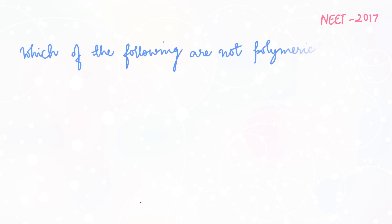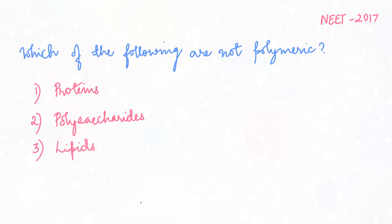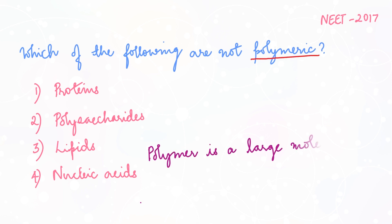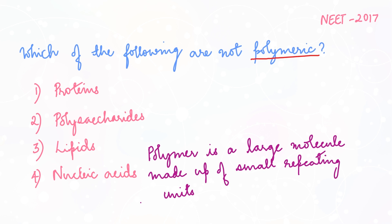The next question is also from NEET 2017: which of the following are not polymeric? Options are proteins, polysaccharides, lipids, nucleic acids. To answer this question you need to know what a polymer is. A polymer is a large molecule made up of small repeating units.